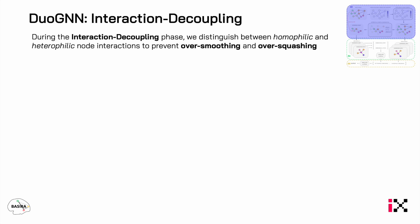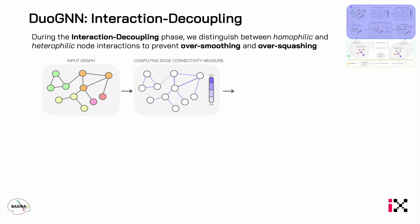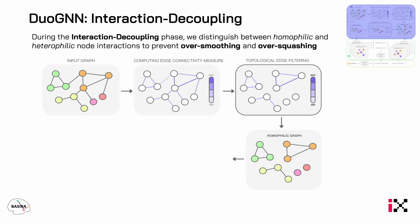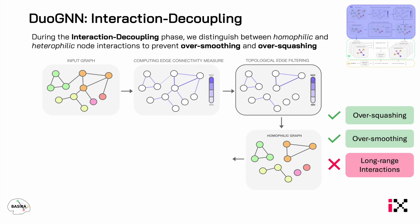Let's see how the first stage works. Here we try to decouple short and long-range interactions. We take the input graph, compute an edge connectivity measure — for example, a centrality measure — and we remove the bottlenecks. The resulting graph has no bottlenecks and a higher homophily. This prevents over-squashing and over-smoothing. However, this also removes long-range interactions within the graph, as the graph is now clustered into different connected components, preserving only short-range interactions.